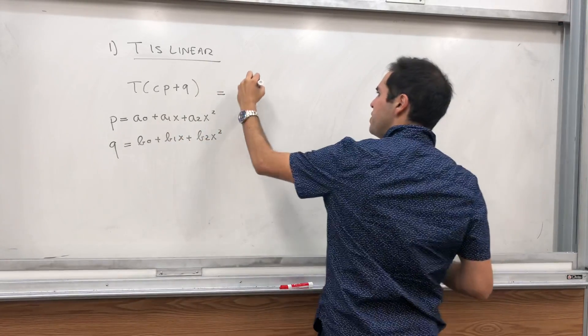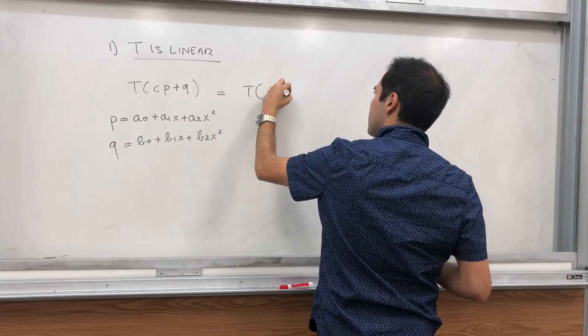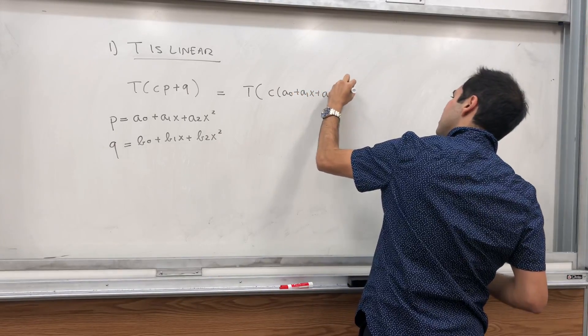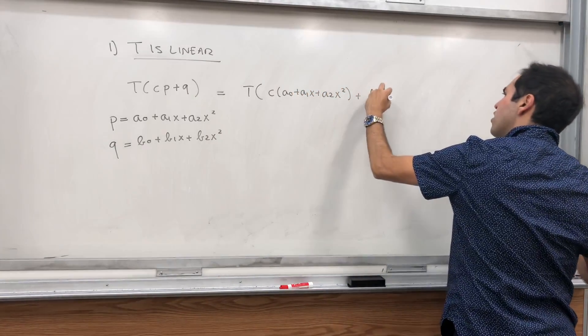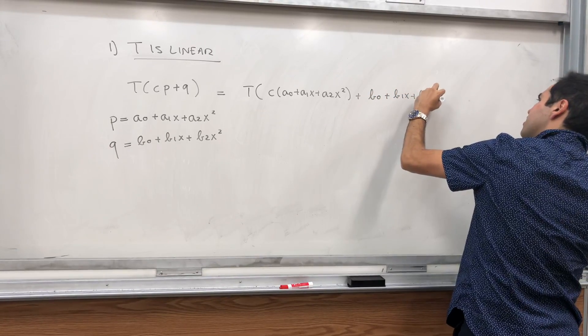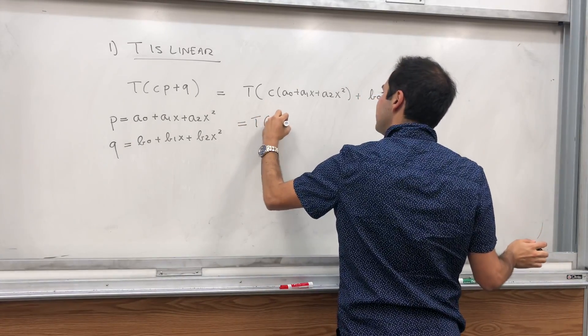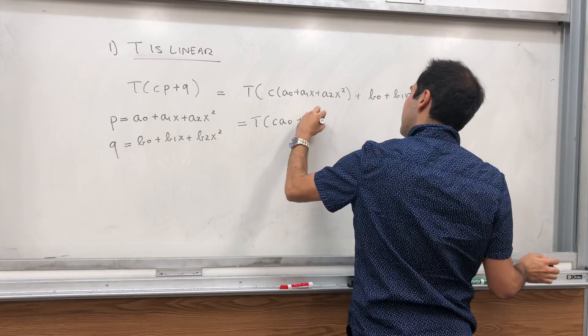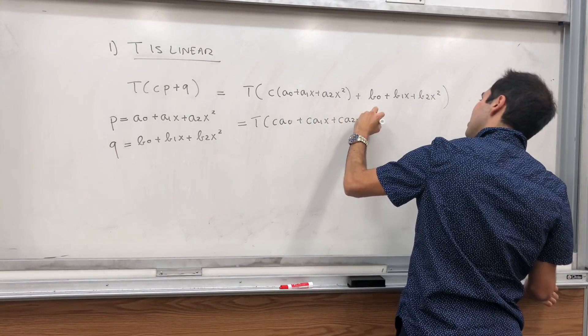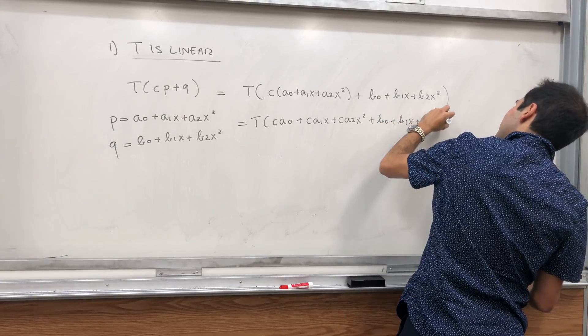Well, then T of Cp plus Q is T of C times (a0 plus a1x plus a2x squared) plus (b0 plus b1x plus b2x squared). And that's T of Ca0 plus Ca1x plus Ca2x squared plus b0 plus b1x plus b2x squared.